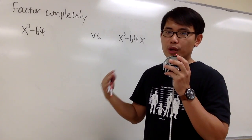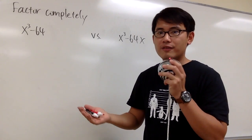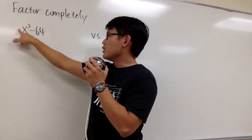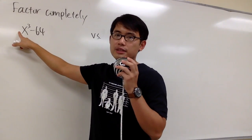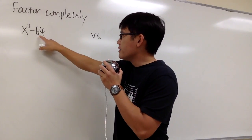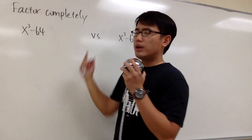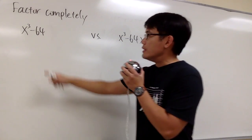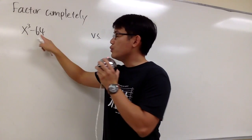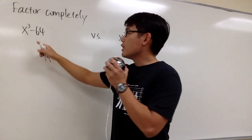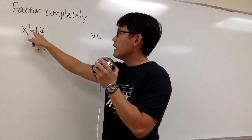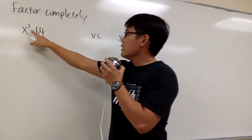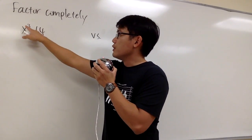As usual, we should try to see if there's any common factor that we can factor out. But since the first term has just a 1 in front of x to the third power, and the second term is just 64 with no x, we cannot factor out anything. We see that this is a two-term expression, so we can use a factoring formula — and since this is the third power, it's going to be a difference of two cubes.